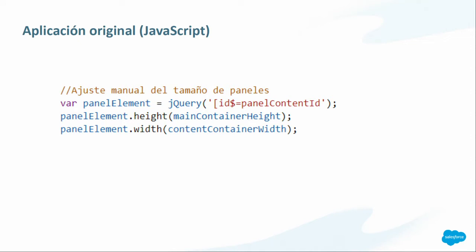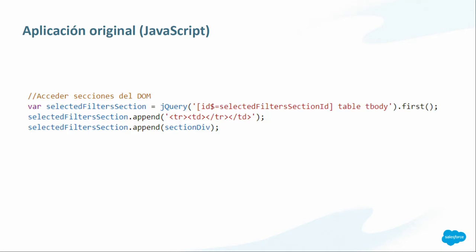Otra cosa que tuvimos que hacer manualmente utilizando JavaScript y más que nada jQuery fue cambiar el tamaño de los paneles. Si el usuario estaba viendo nuestra aplicación en un iPad, los componentes se salían y no quedaban bien distribuidos en la página. Lo que hicimos fue utilizar jQuery para poner el alto y el ancho de acuerdo al tamaño que tenía nuestro navegador. Otra práctica fue acceder a los componentes directamente con el DOM, lo cual no es muy seguro porque estás exponiendo cualquier parte de la página Visualforce a cualquier otro componente de la propia página, lo cual es un riesgo para la seguridad.